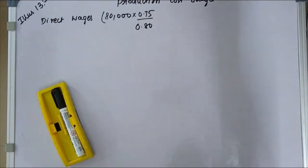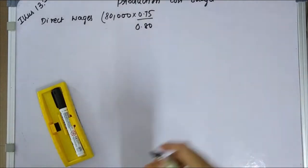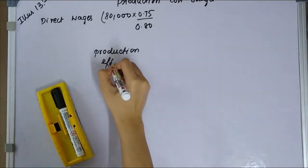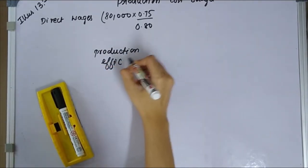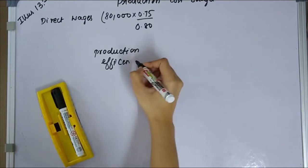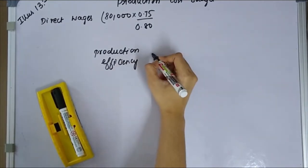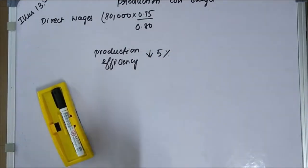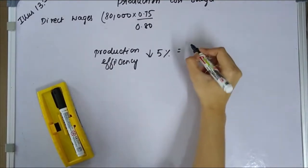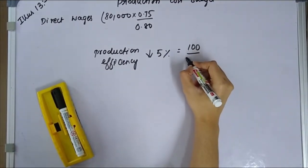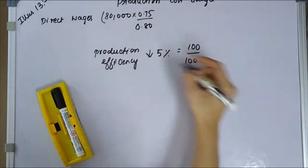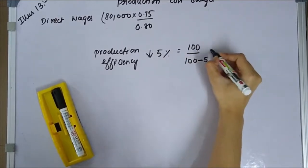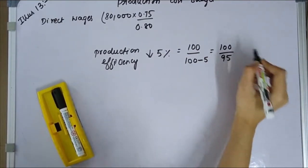Next, production efficiency is reduced by 5%. So the efficiency factor becomes 100 divided by 95. If efficiency increases, we add; if efficiency decreases, we subtract 5, giving us 100 divided by 95.